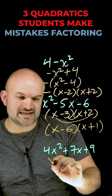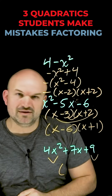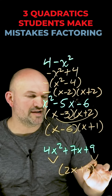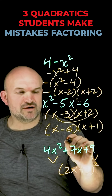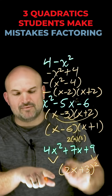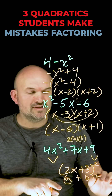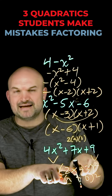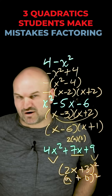The last one: students often see that the first term is squared and the last term is squared, and they immediately think it's a perfect square trinomial — so that's (2x plus 3) squared. Unfortunately, that only works when the middle term equals 2 times a times b, where a is your first term and b is your last term. In this case, 2 times 2x times 3 would give 12x, and that middle term is not 12x.